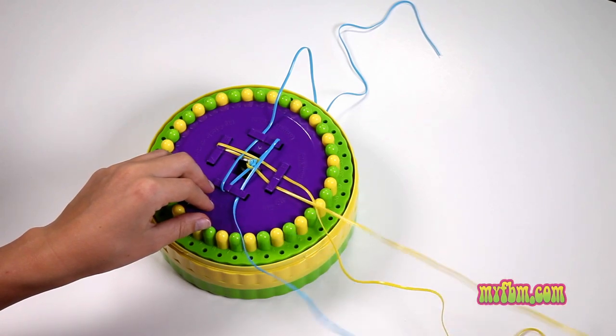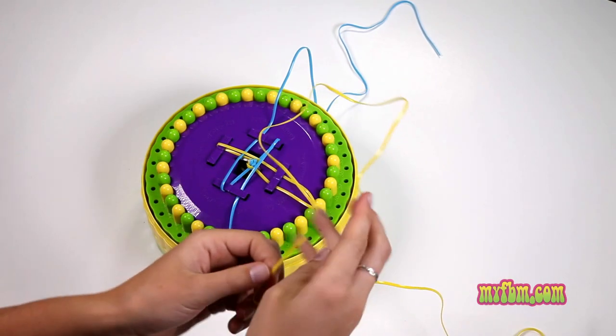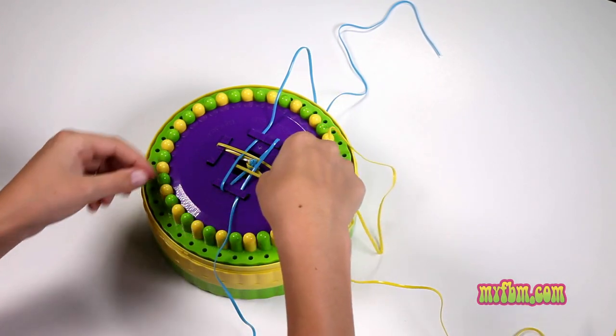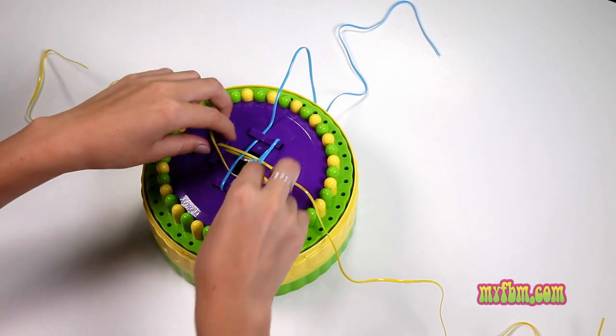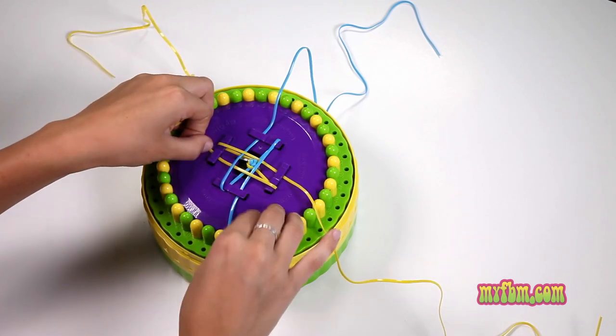Take the number four, go over the number five and under the number six. Make sure it's straight before placing it under the number seven.